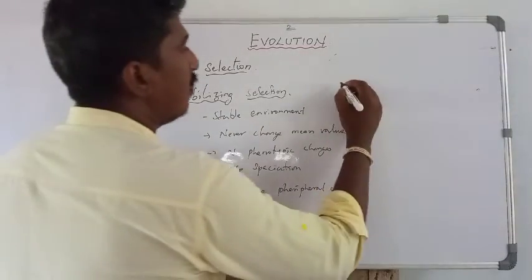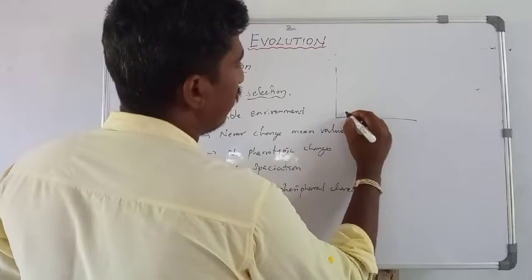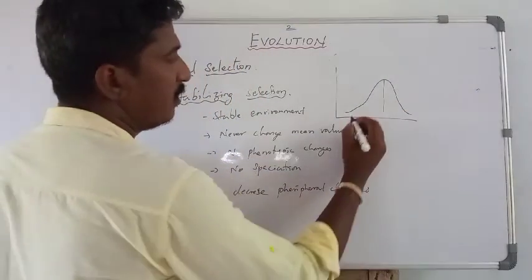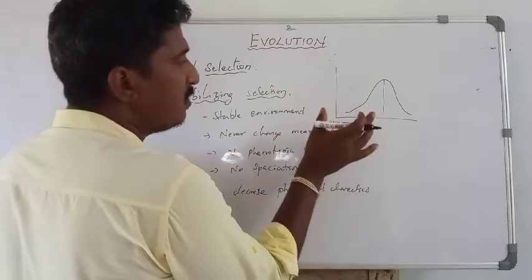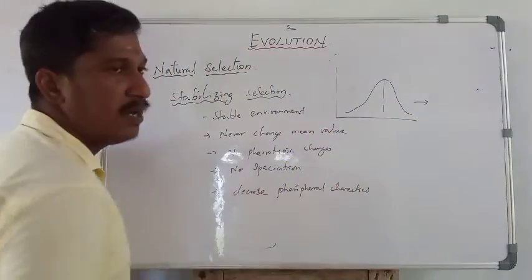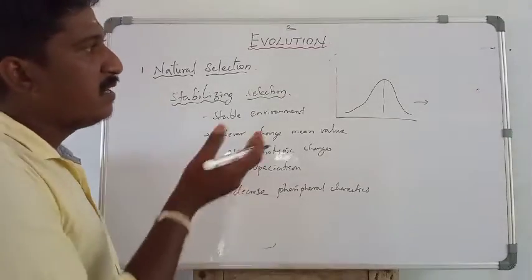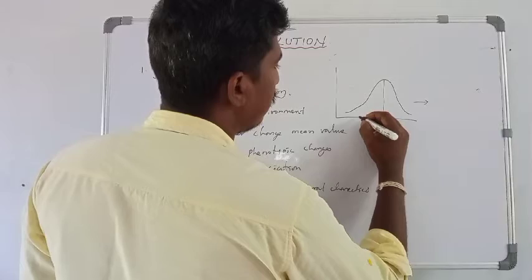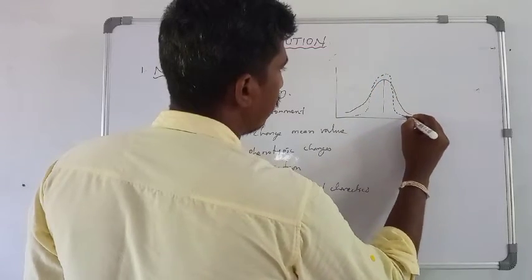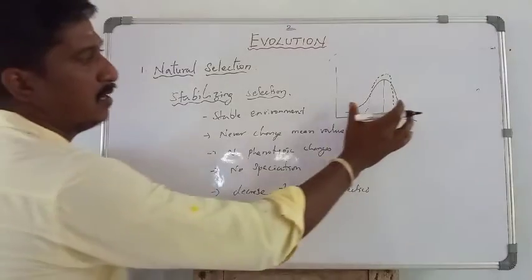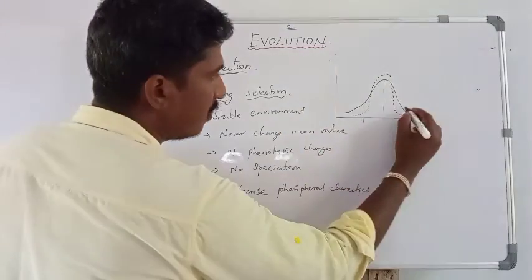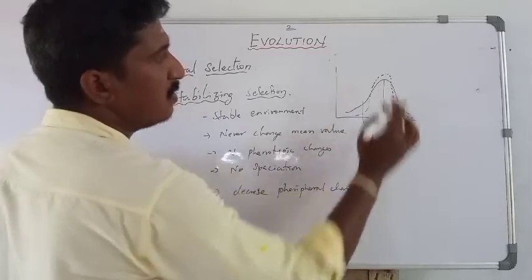When we explain the content in a graph, this is a normal population graph. The mean value is at the center and the peripheral values are at the sides. Due to natural selection, the peak value will become narrow and also increase in height. So the peripheral population is decreased and the average value is increased.